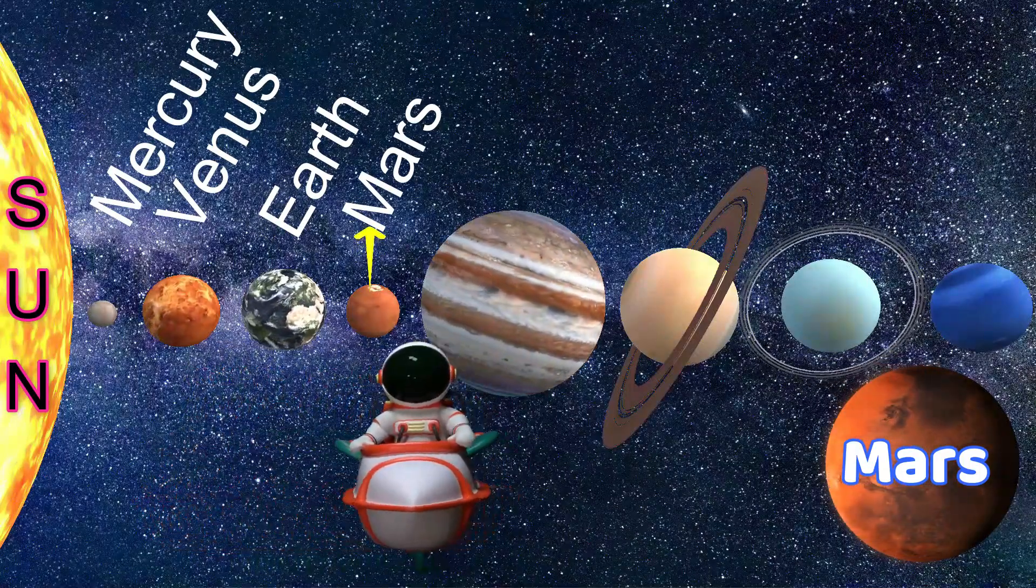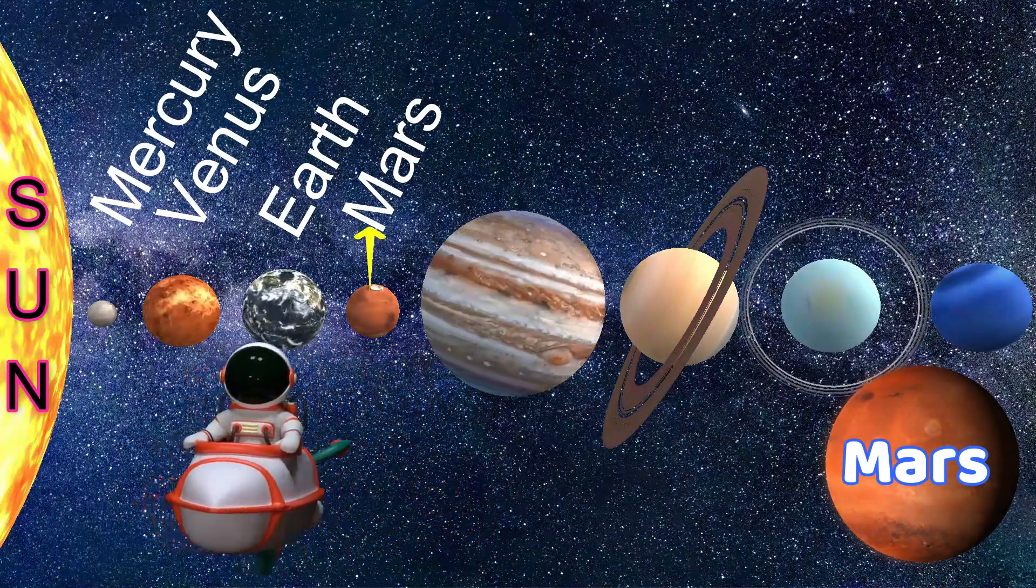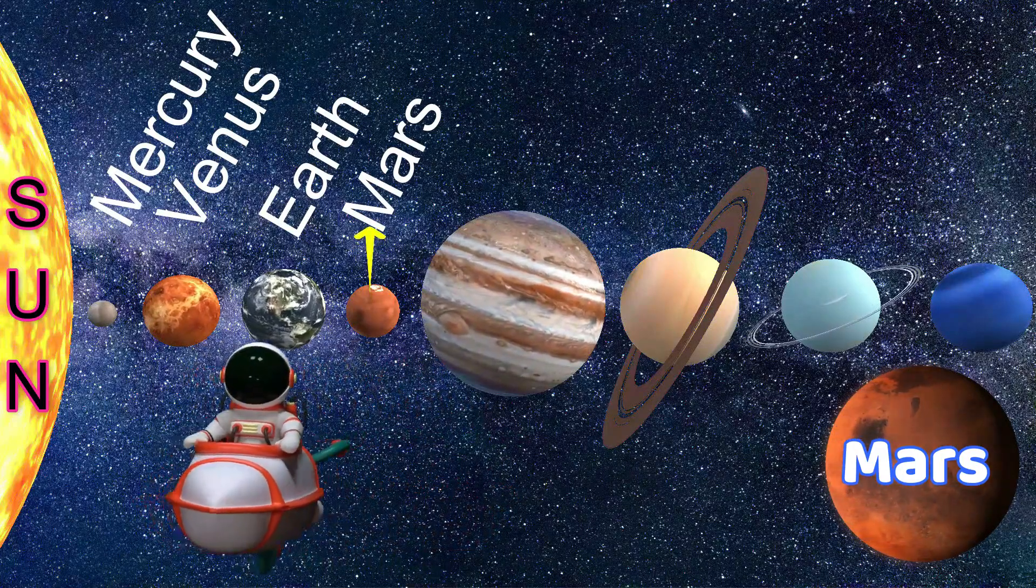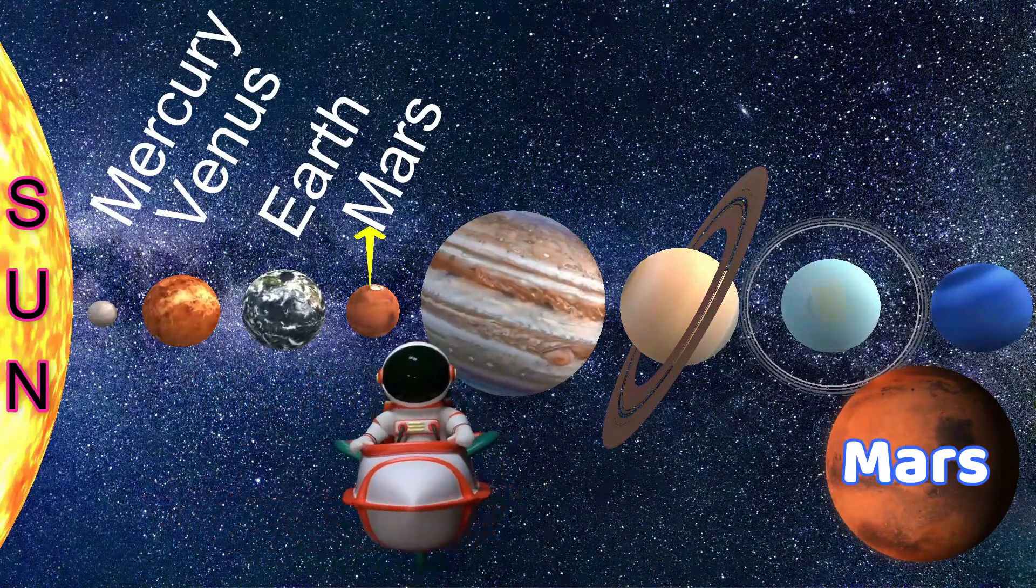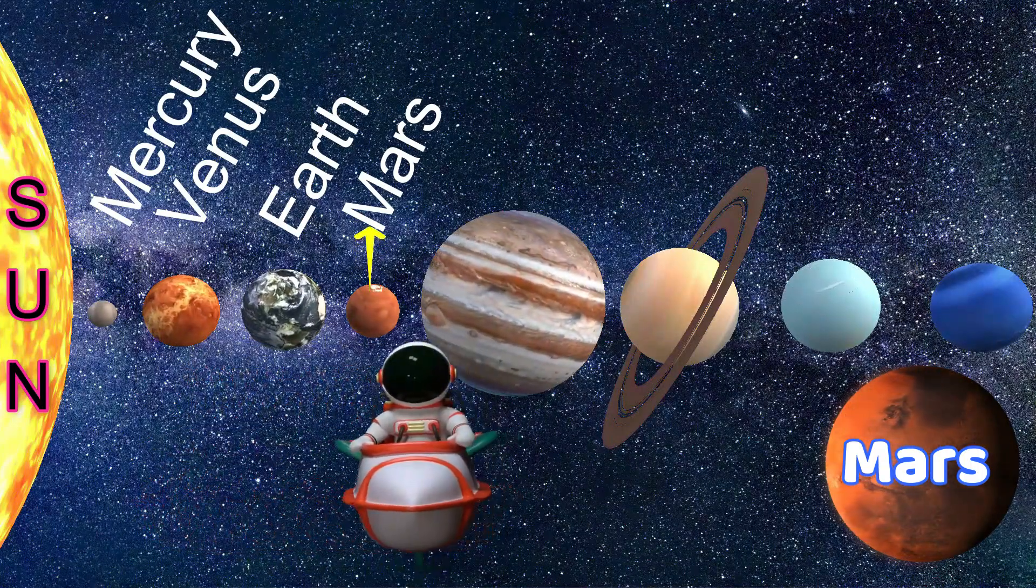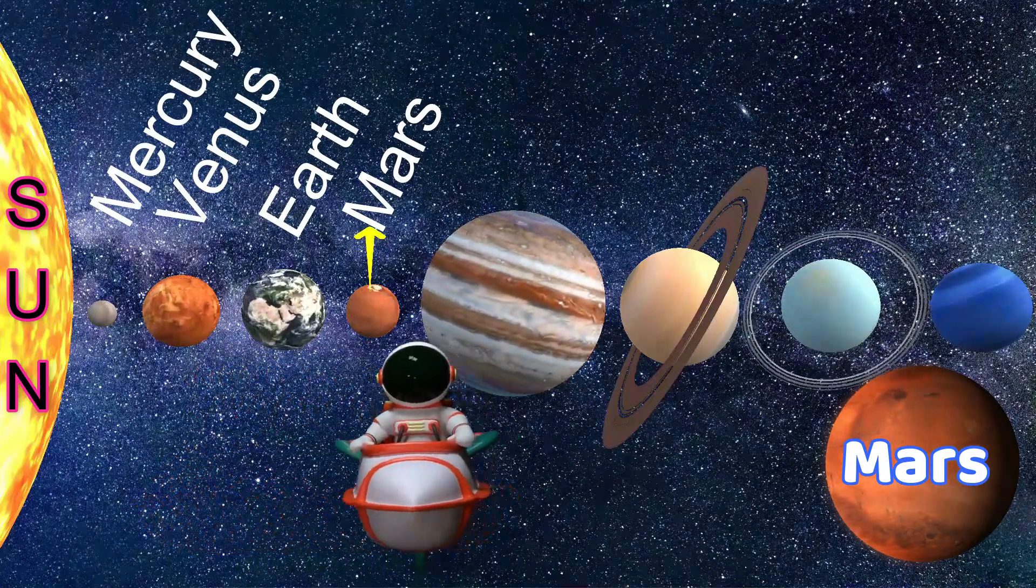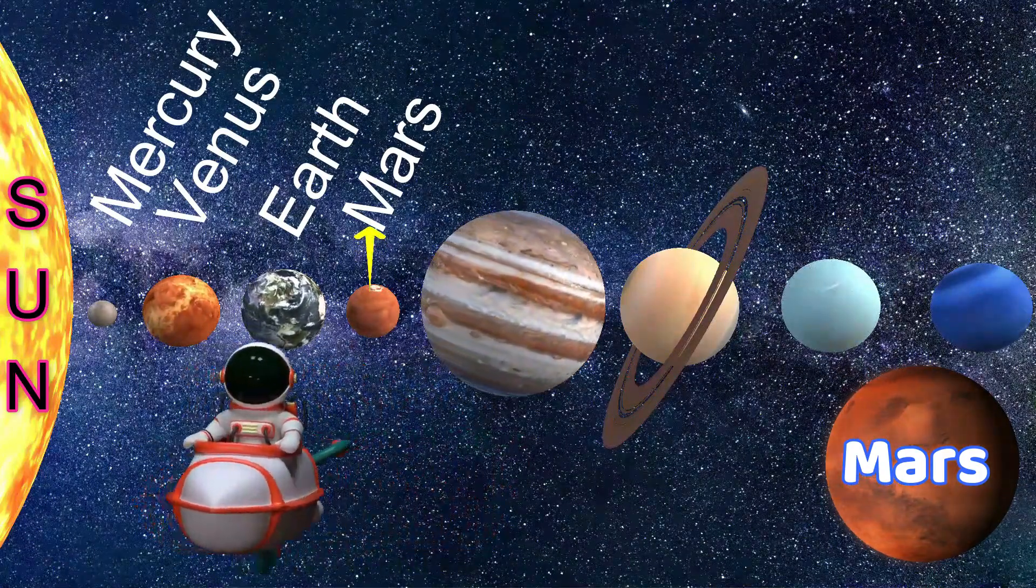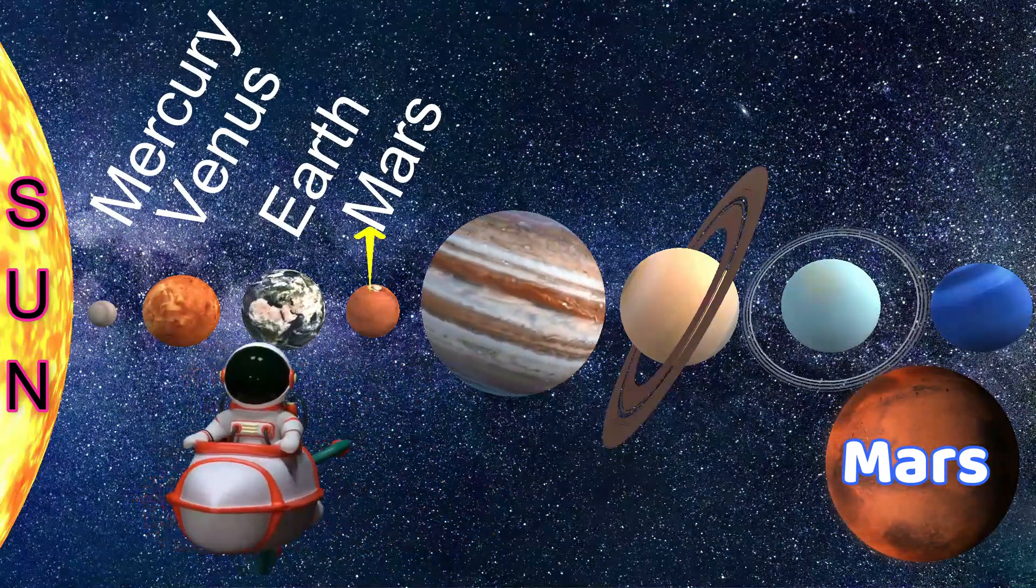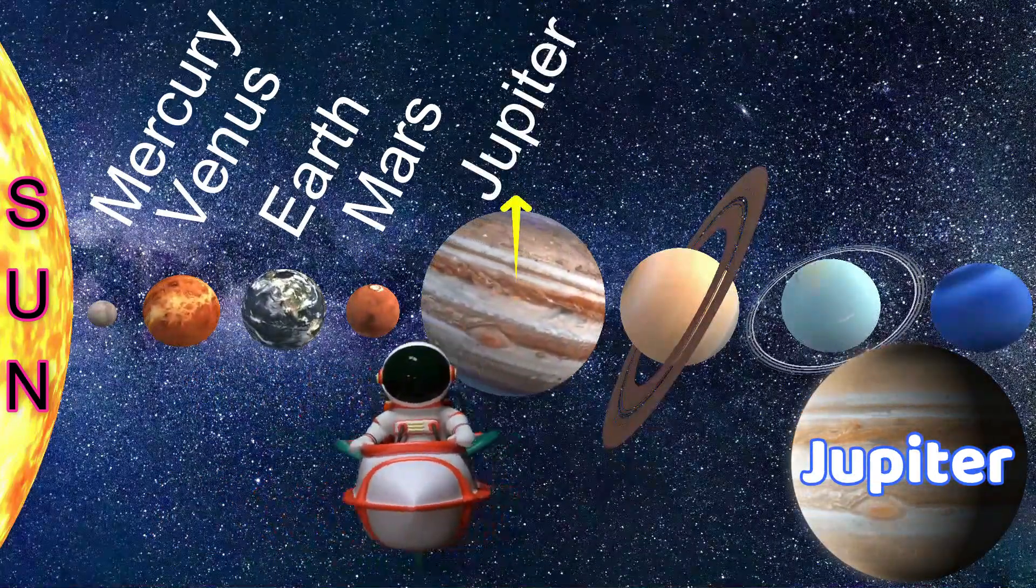The next planet is Mars. This is called the red planet because of iron-rich red soil. And it is the second smallest planet, friends. Mars has two natural moons, Phobos and Deimos. The largest volcano and the tallest mountain in the solar system, Olympus Mons, lies on Mars.